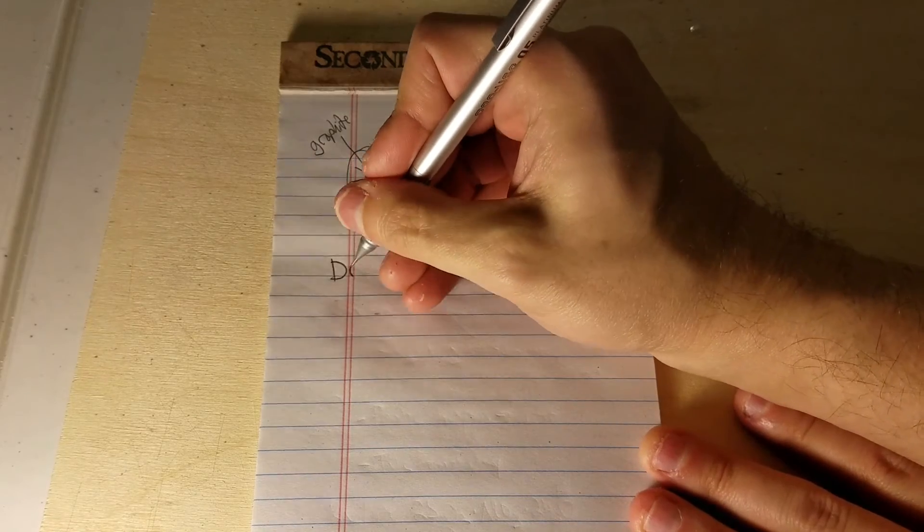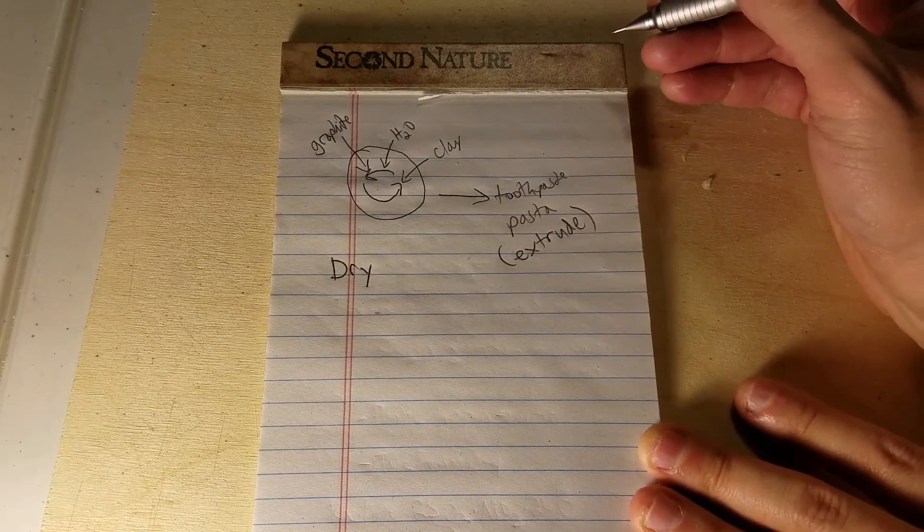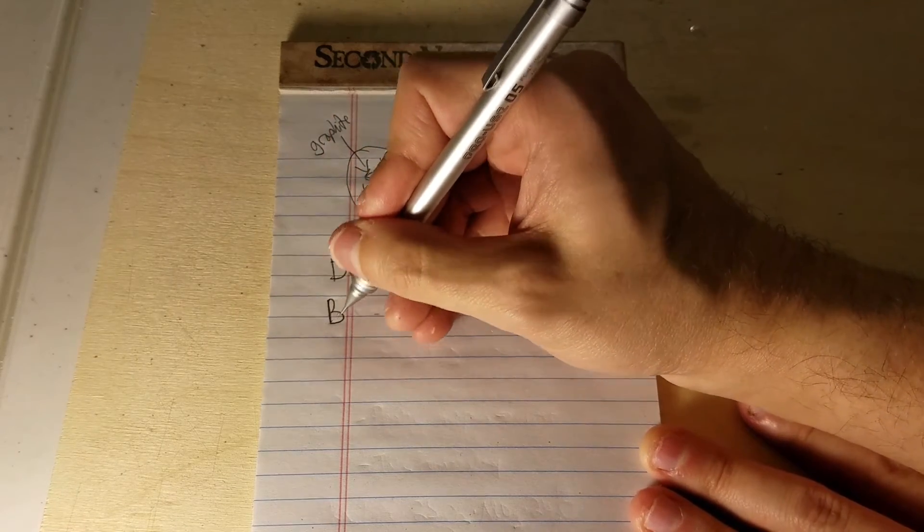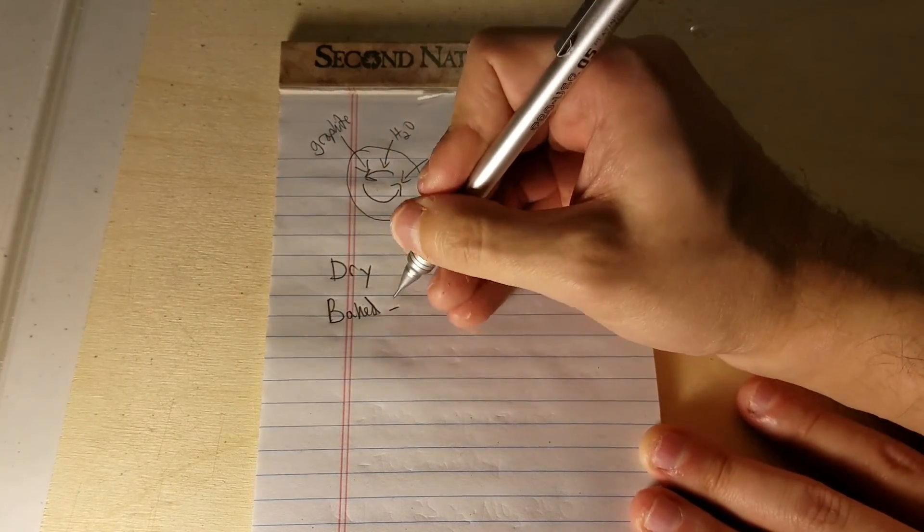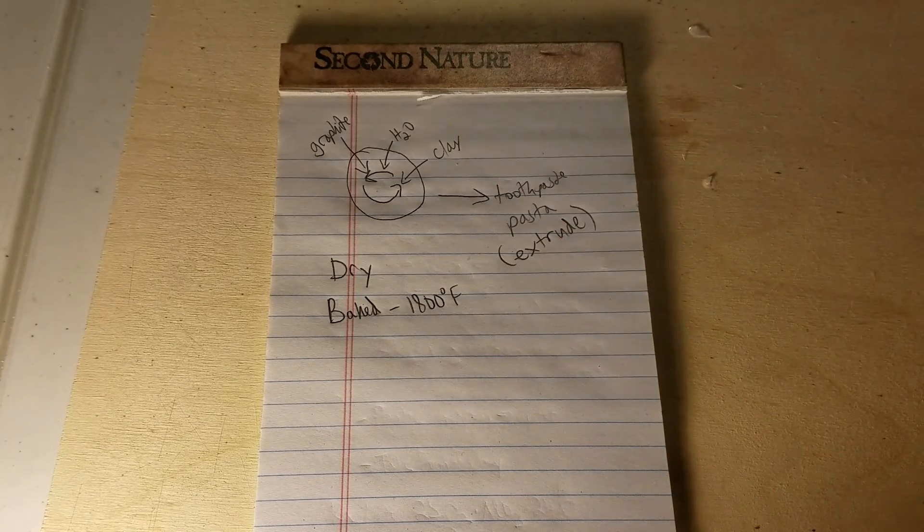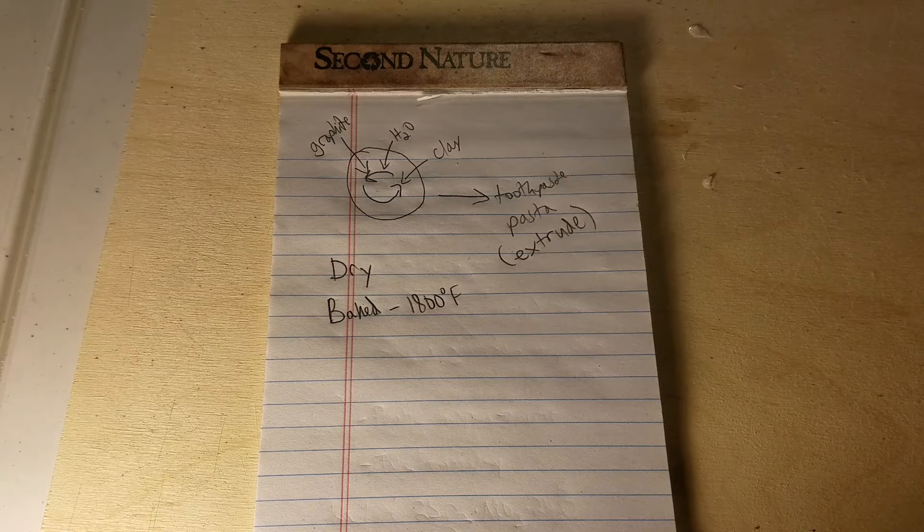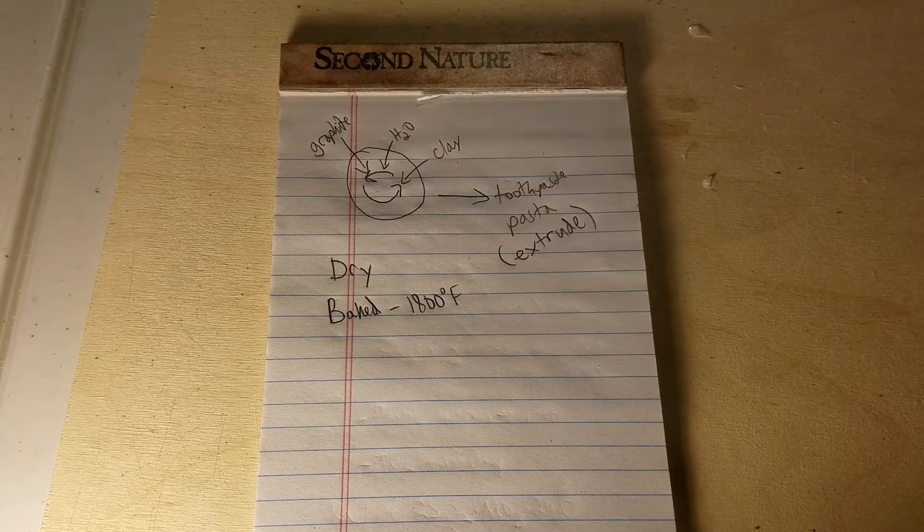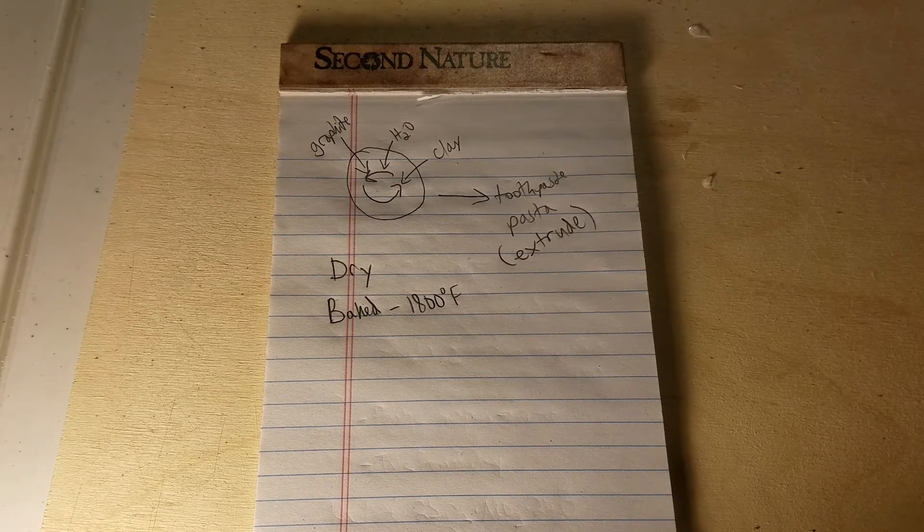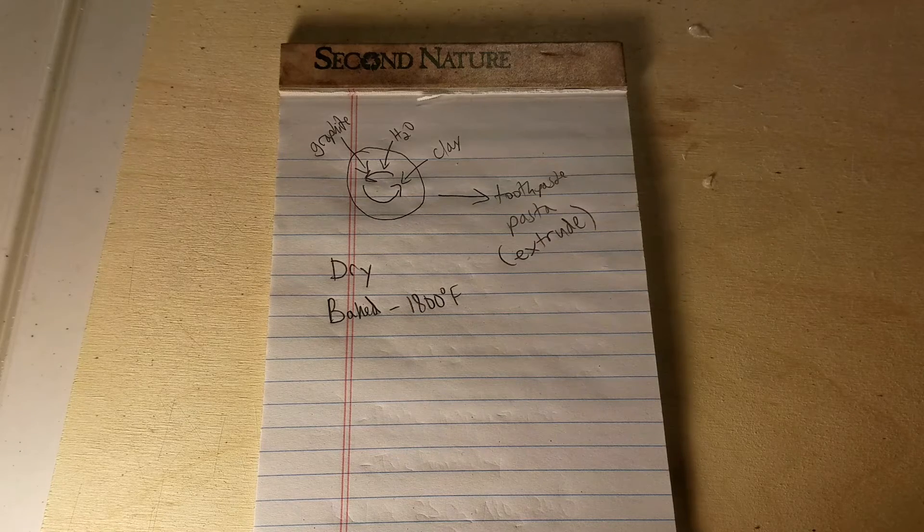And after you extrude it, you dry it out to a certain specification. And then it is baked at a temperature of around 1800 degrees Fahrenheit. And that baking helps to cure it and remove any of the additional water that is not needed to make it a tougher lead. And that's the basic process of making a pencil lead.